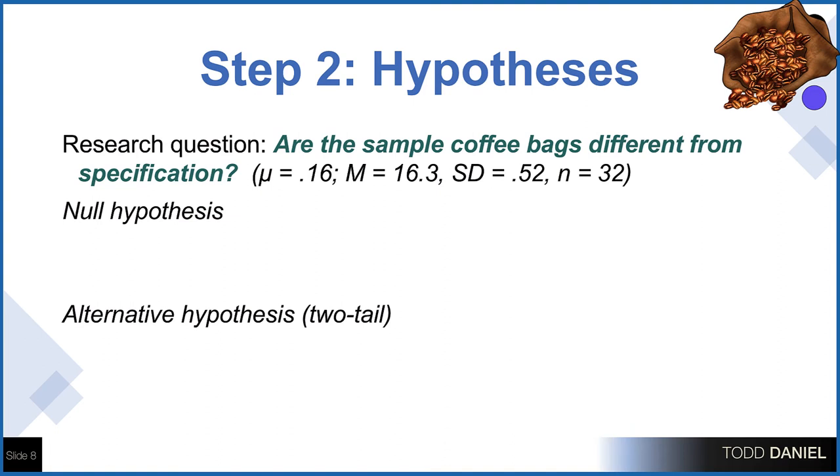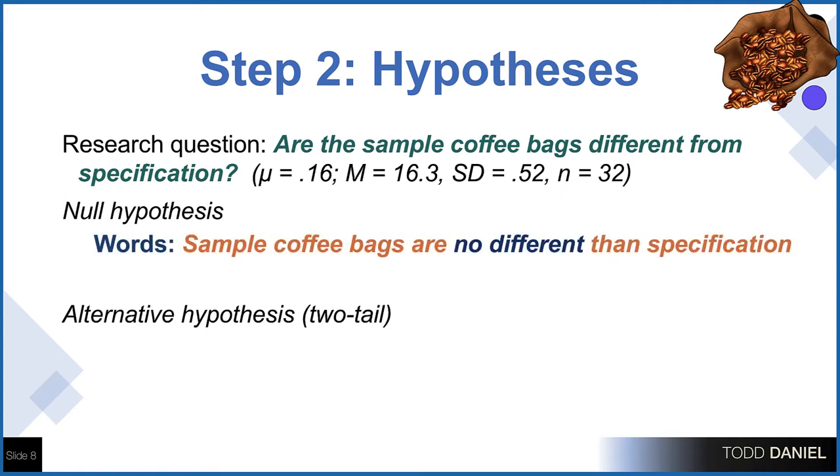Step two, establish the null and alternative hypothesis. Our research question says, are the sample coffee bags different from specification? We're not establishing a direction of change, heavier or lighter, just are they different? We would write our null hypothesis in words as, sample coffee bags are no different than specification, and in symbols as h sub zero, colon, mu equals 16, where 16 is the mean of the population, the bags should weigh 16 ounces.